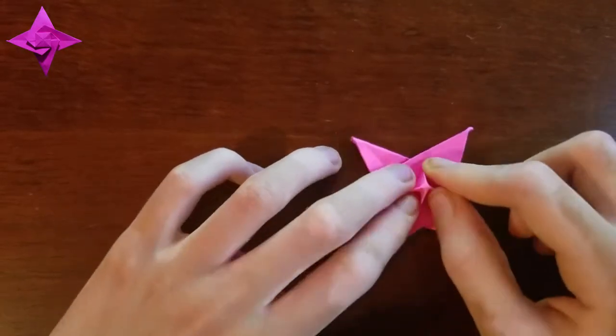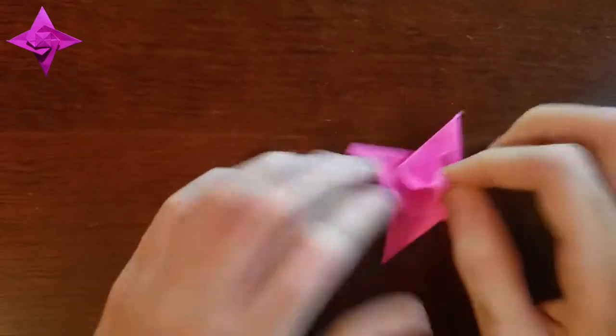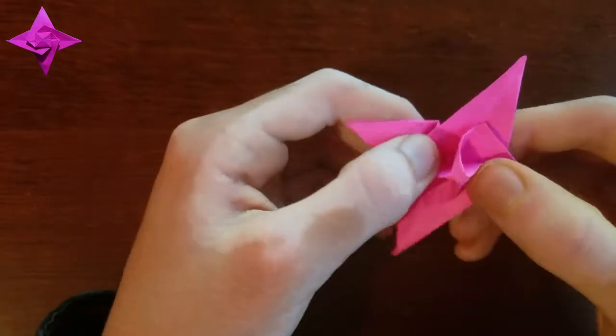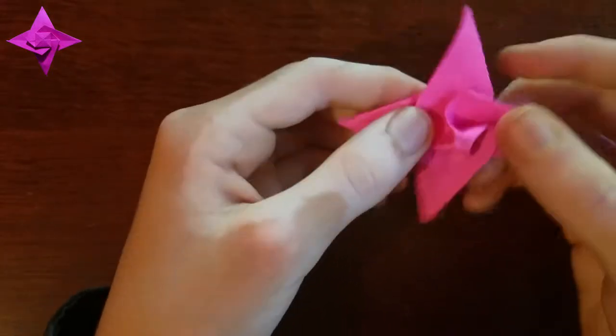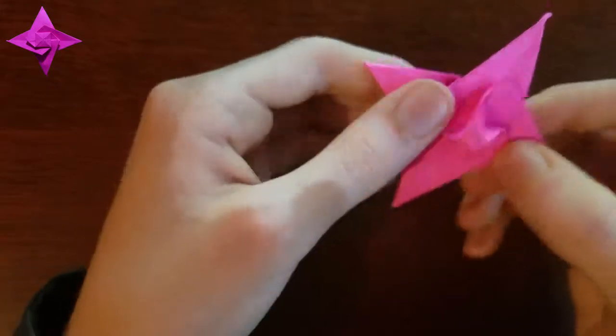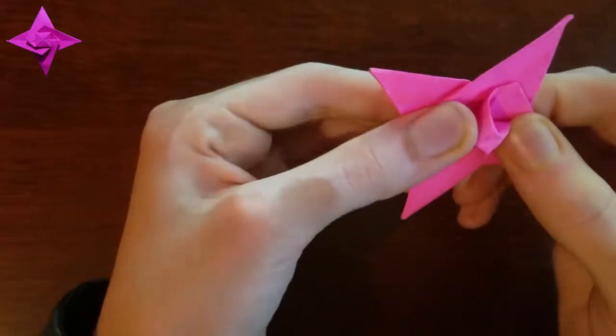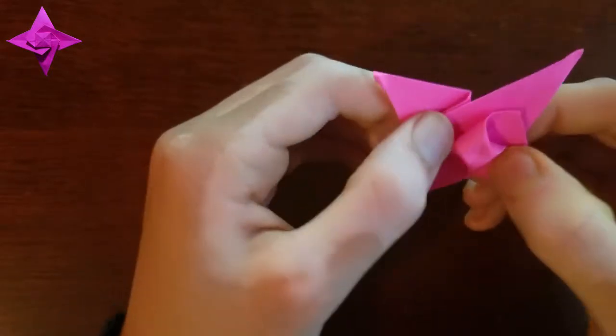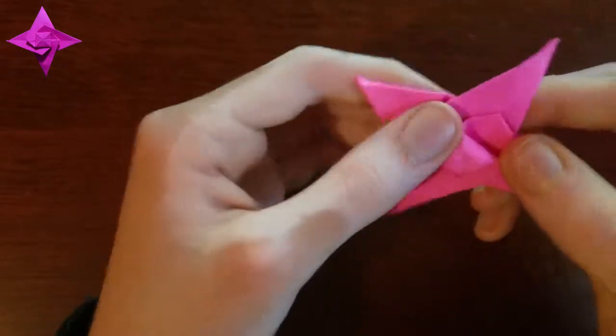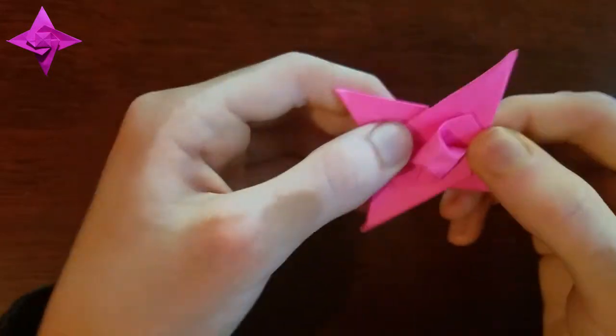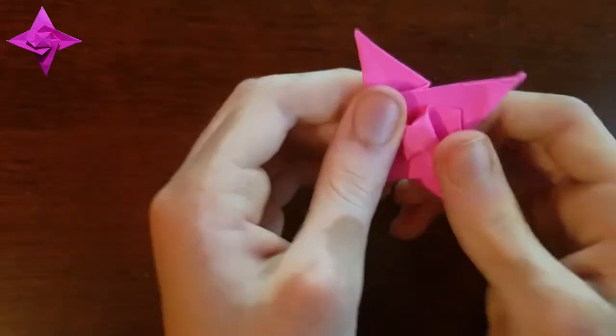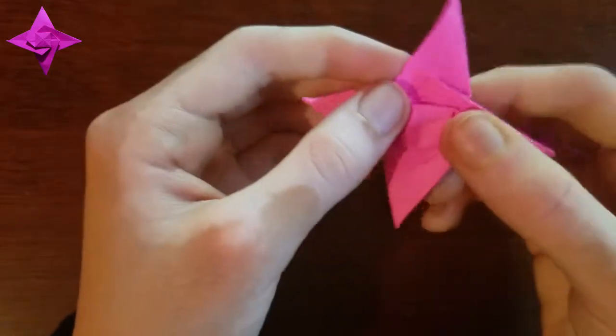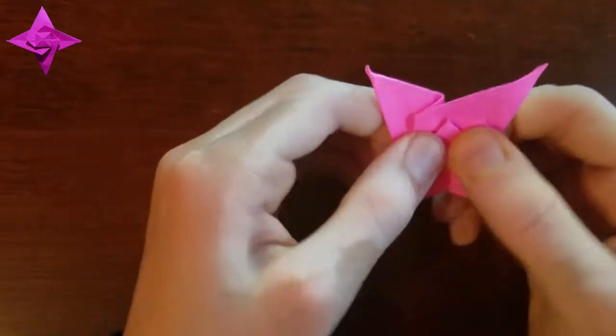So if we pull on all these layers, you'll kind of see that getting spread out and it'll make like this little square. Just slowly squash it and flatten it.